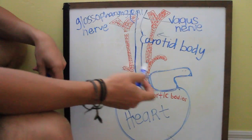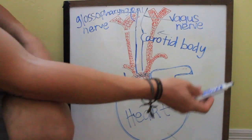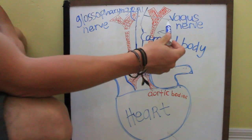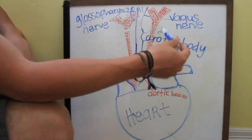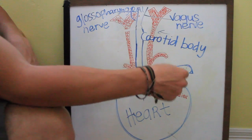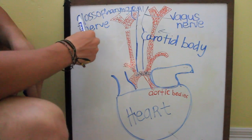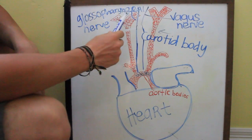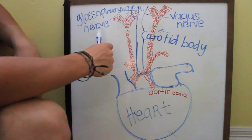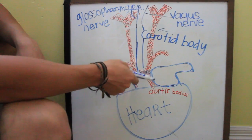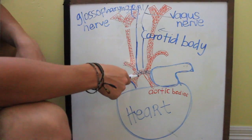There are two chemoreceptor neurons. The first being the vagus nerve, which is in the carotid bodies, and the second being the glossopharyngeal nerve, which is in the aortic bodies.